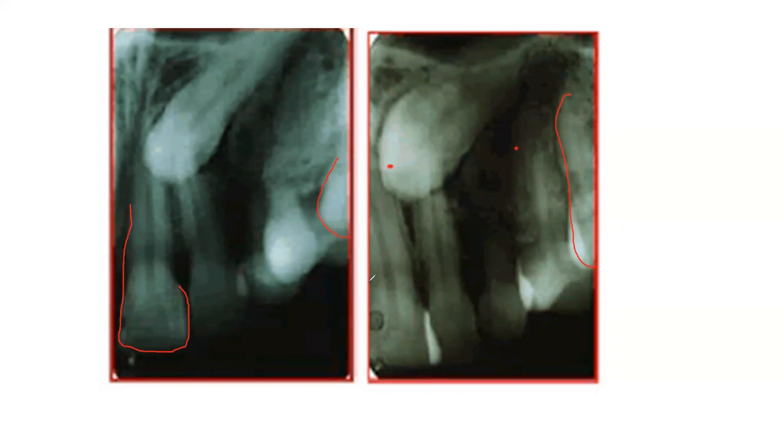First I determine which x-ray was taken more mesially and which more distally. In the first x-ray on the left, I can see a complete lateral incisor and only the mesial one-third of the crown of the six. In the other x-ray on the right, I can see a complete root of the molar but only part of the incisor. So the first x-ray is more mesial and the second is more distal.